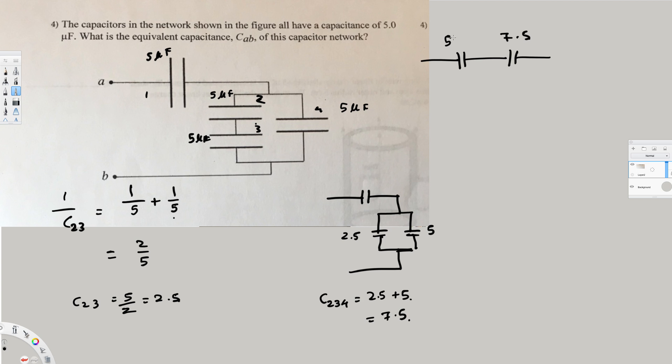Now we just have to add them. 1 over C1234, or Cab - same thing - this is going to be the final value. So 1/Cab equals 1/5